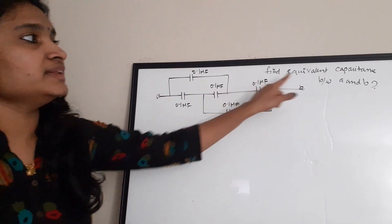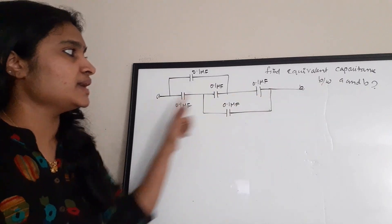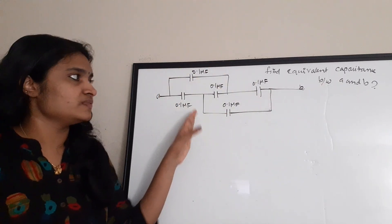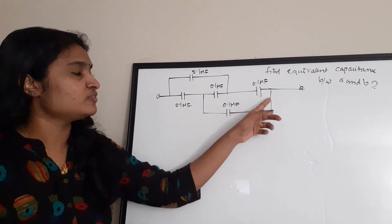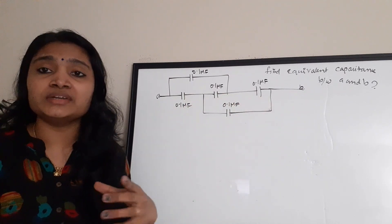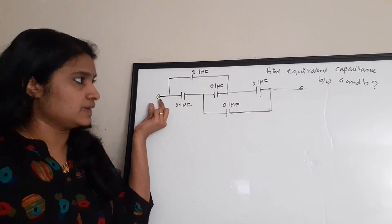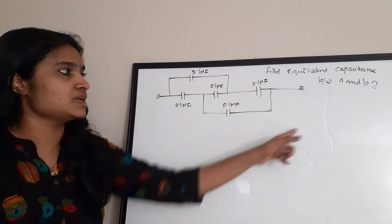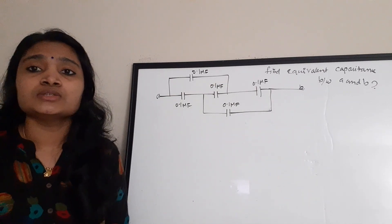The next question asks you to find the equivalent capacitance between terminals A and B. There is a connection of various capacitors — totally 5 capacitors are there. You need to find the equivalent capacitance between point A and point B.